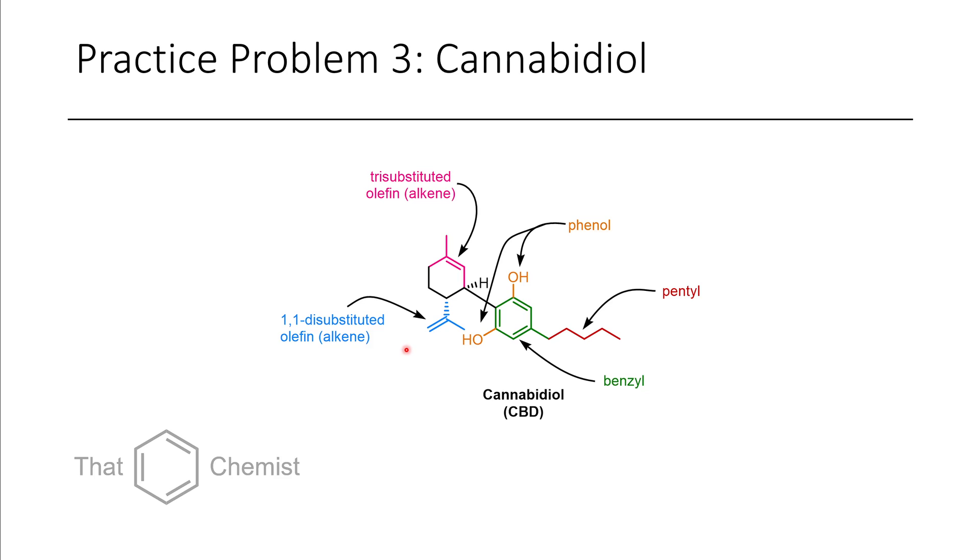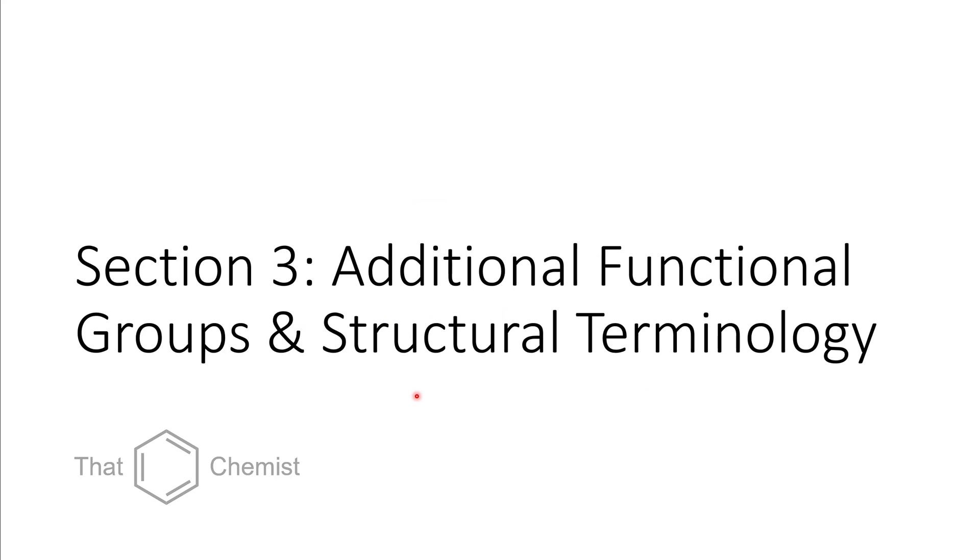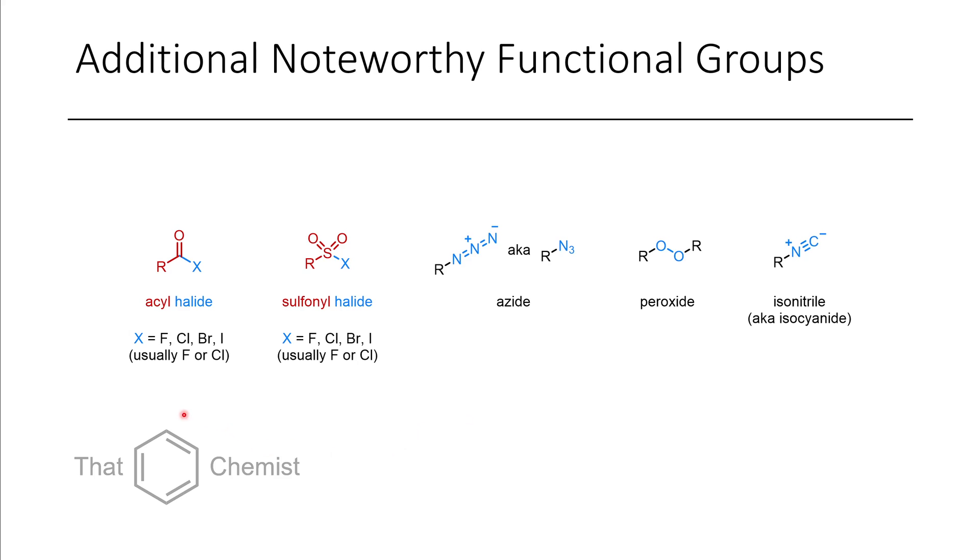Now, before we go too much into alkene geometry, we're going to go through a couple other functional groups that I've neglected to mention so far. So, when we have a carbonyl, in general, if you're referring to all of it except for one substituent, it's appropriate to call it an acyl group. Now, if the other substituent is a halogen, such as fluorine or chlorine, this would be called an acyl halide.